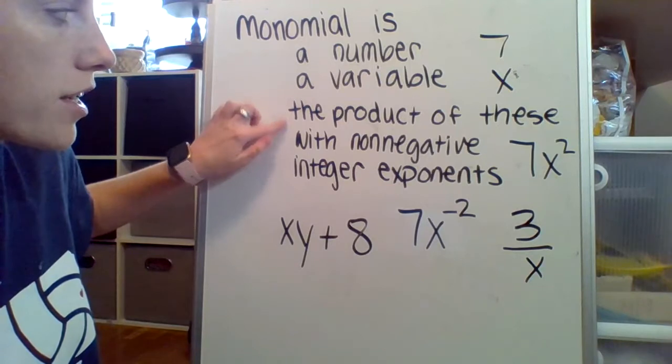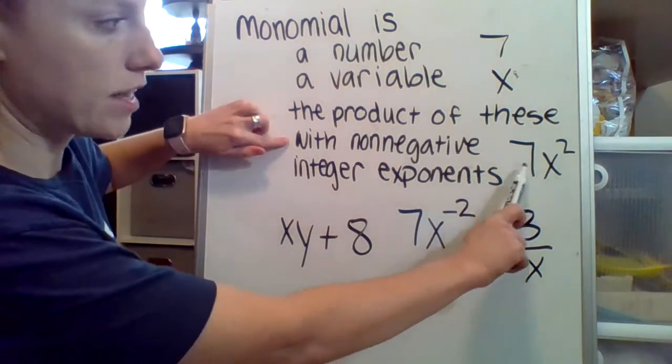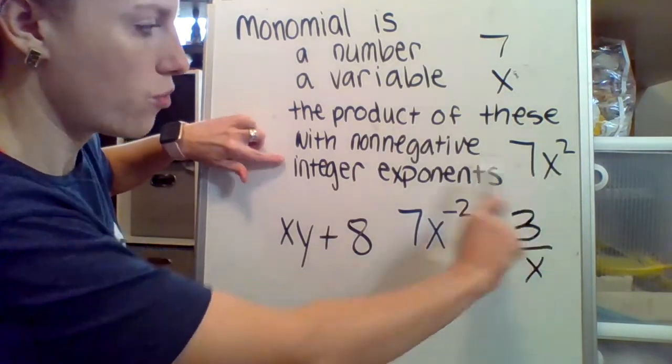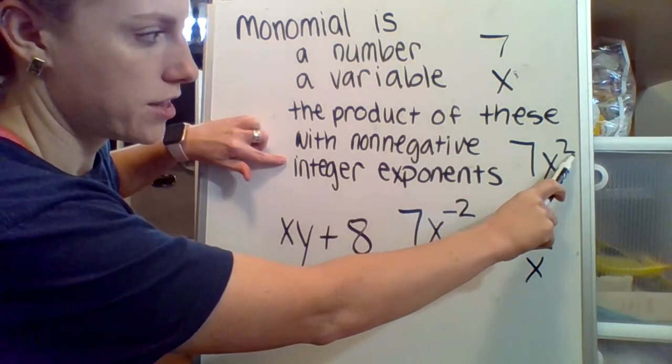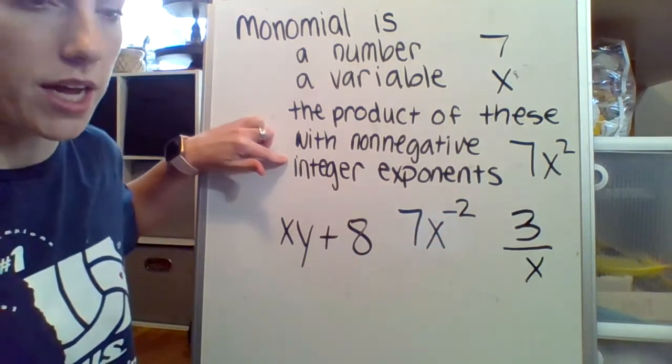It is the product of these, like 7 times x squared, with a non-negative integer exponent. This exponent cannot be negative.